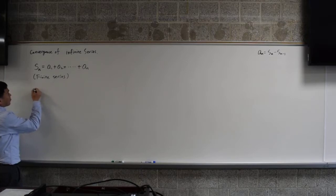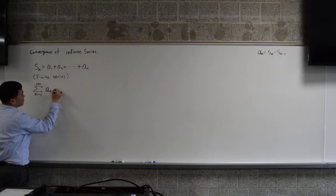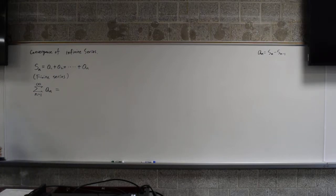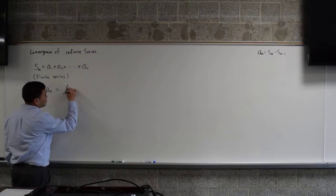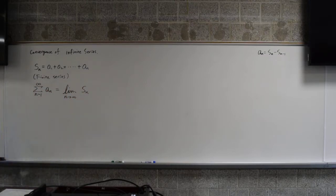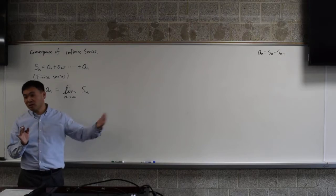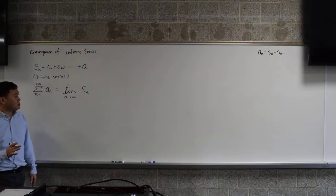Now summation from n through 1 through infinity of a_n is defined as the limit of this finite series. So if you take partial sums and make it go to infinity, then it will be infinity.